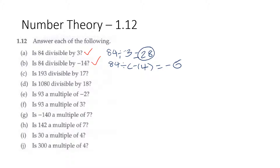Question C: is 193 divisible by 17? 193 divided by 17 is equal to 11 and 6 over 17, and 11 and 6 over 17 isn't an integer. So no, 193 is not divisible by 17.